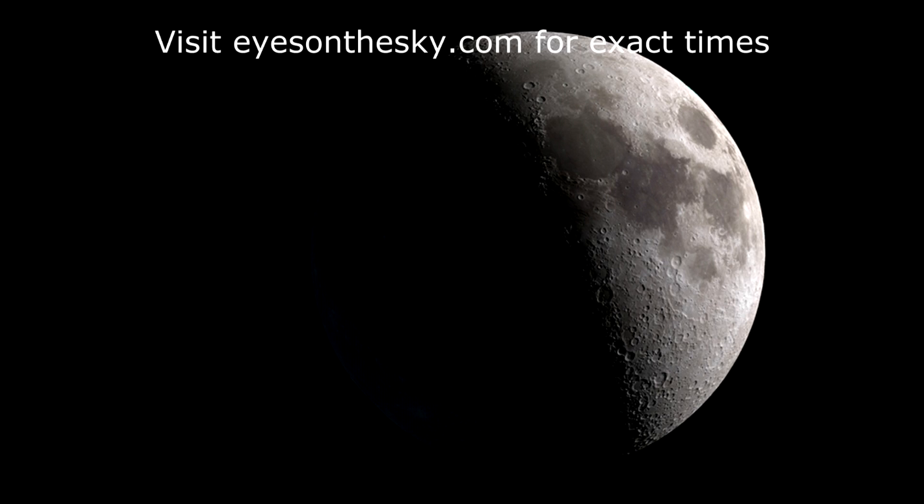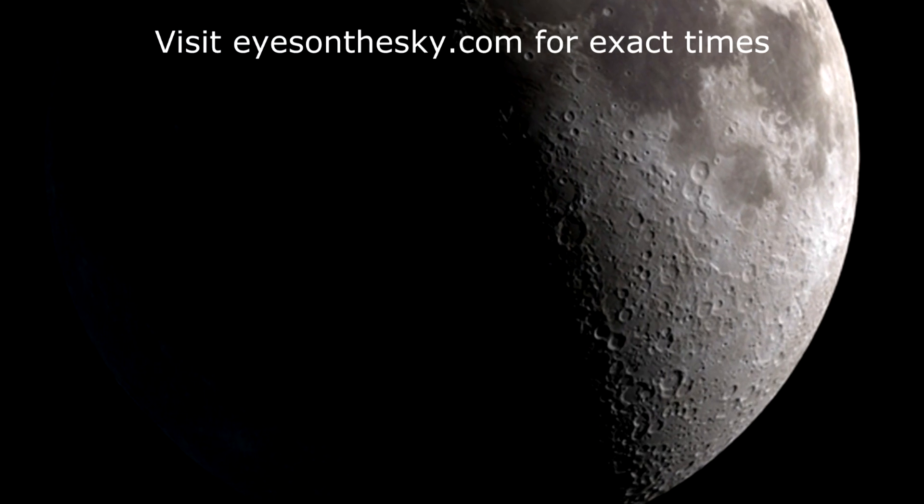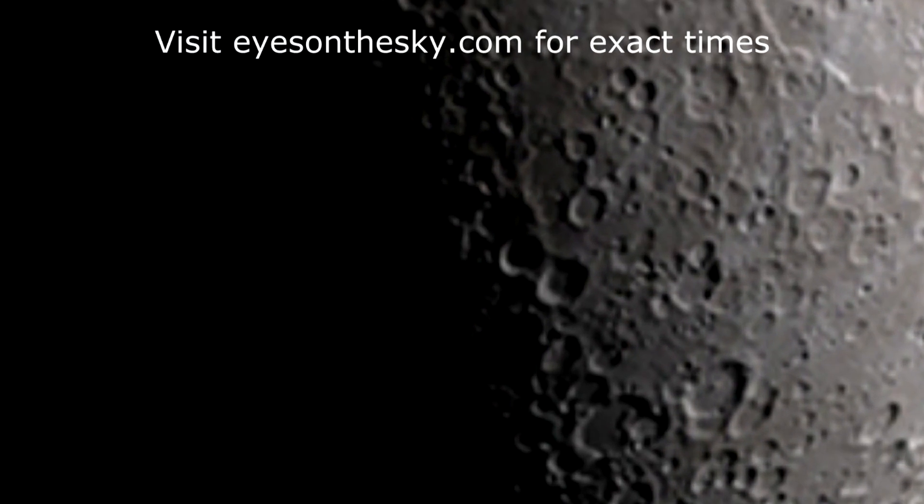The moon reaches first quarter phase on October 11th, when observers in the U.S. will get a look at the Lunar X in the afternoon, and Western Europe gets a nice view of it in the late evening hours.